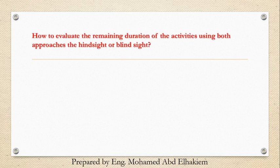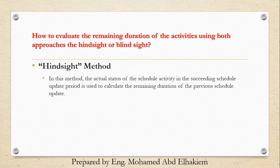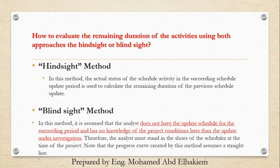How to evaluate the remaining duration of activities using both the hindsight and blind sight approaches? Hindsight method: the actual status of the schedule activity in the succeeding schedule update period is used to calculate the remaining duration of the previous schedule update. Blind sight method: it is assumed that the analyst does not have the update schedule for the succeeding period and has no knowledge of the project conditions later than the update under investigation. Therefore, the analyst must stand in the shoes of the scheduler at the time of the project. Note that the progress curve created by this method assumes a straight line.